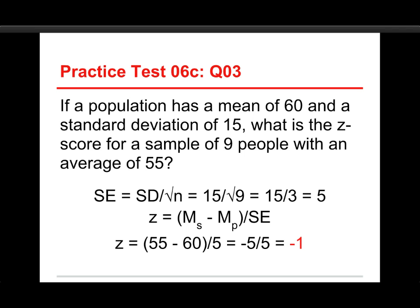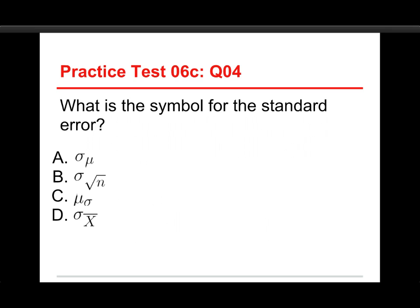And again, what this means is that the sample of 9 people has an average score of 55, which is 1 standard error below the population mean. Anyhow, that's where that is. Number 4.